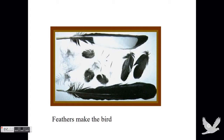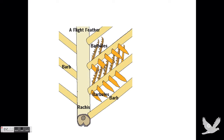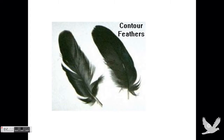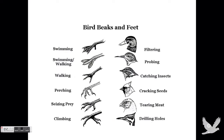It's feathers that make a bird different from the rest of the animals in the animal kingdom. These are contour feathers, and these are down feathers, which keep the bird warm.